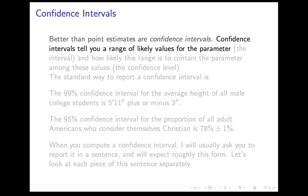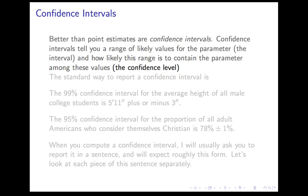Confidence intervals tell you a range of likely values for the parameter. By a range, I mean an interval — hence confidence interval. They also tell you how likely this range is to contain the parameter among its values. That is the confidence level. Confidence and interval address the two issues: the interval of reasonable values, and the confidence with which you believe the parameter is in that range.